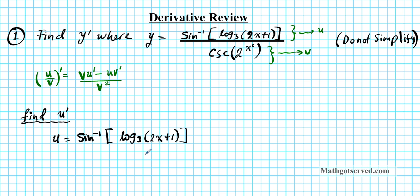Since we have three functions, we're going to have to use the chain rule twice. Let's go over the formulas we're going to use to find the derivative of u, the numerator function, and then we're going to apply them to computing the derivative.